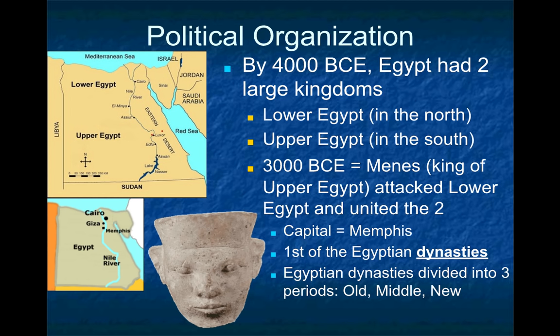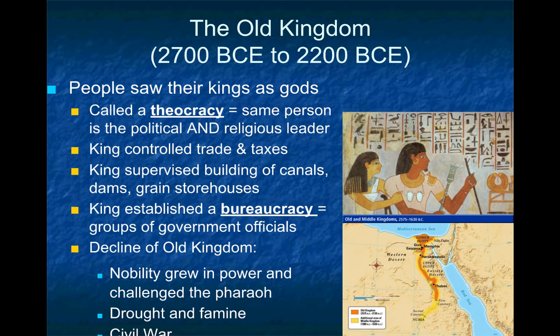Menes established the first Egyptian dynasty, and when he united Upper and Lower Egypt, that effectively signaled the start of the Old Kingdom. We divide the Egyptian dynasties into three: the Old, the Middle, and the New Kingdom. The Old Kingdom starts a little after Menes but lasts for about 500 years. We describe the Old Kingdom as a theocracy — a term we'll see in many other places in world history — which is simply a religious government. There was little distinction between religious leadership and political leadership, so the kings were also priests.